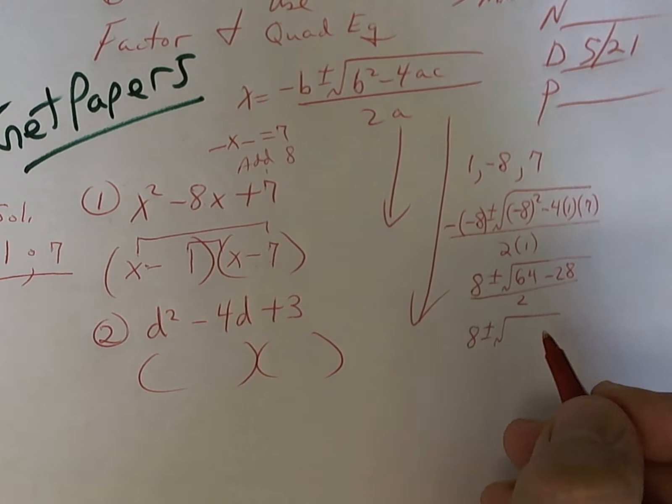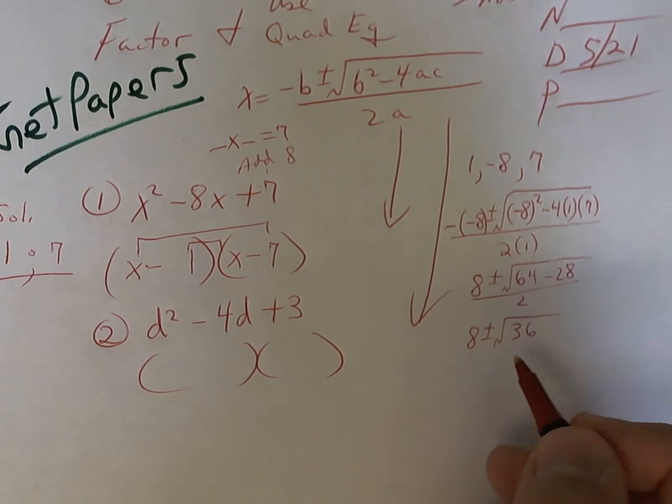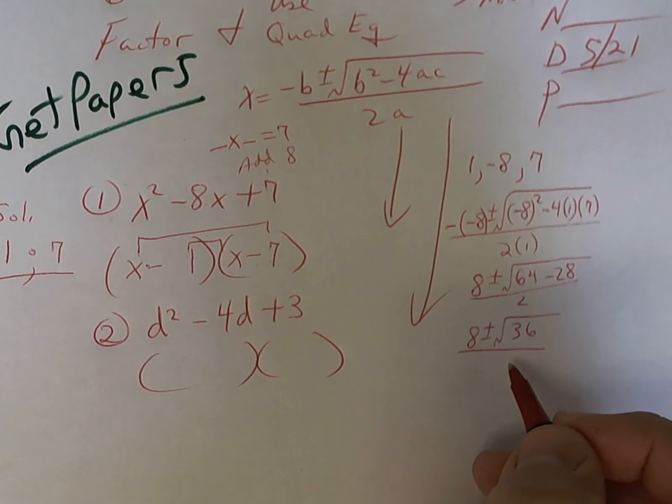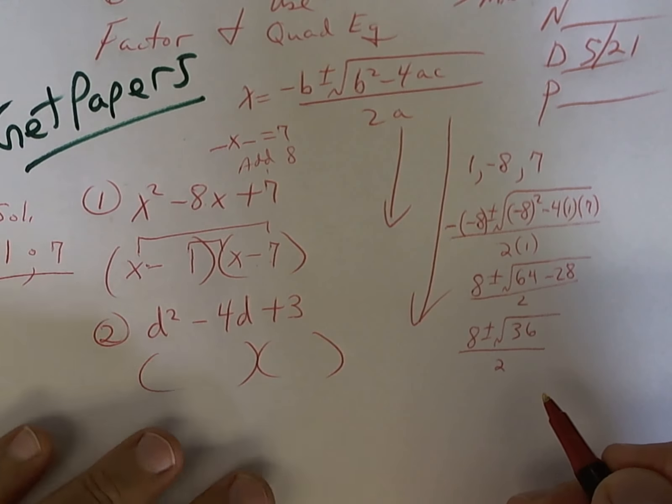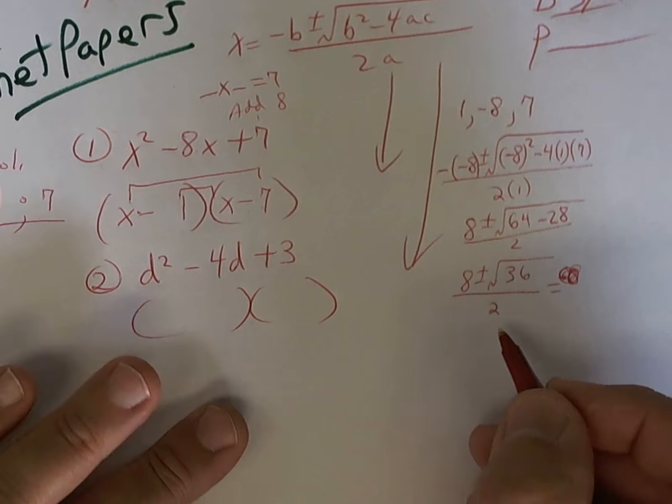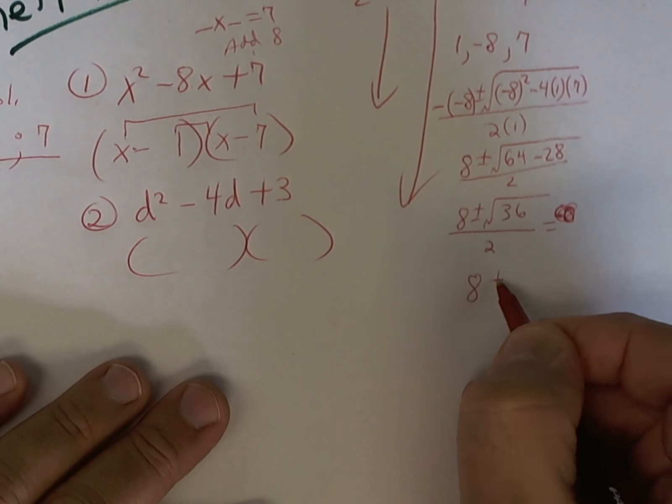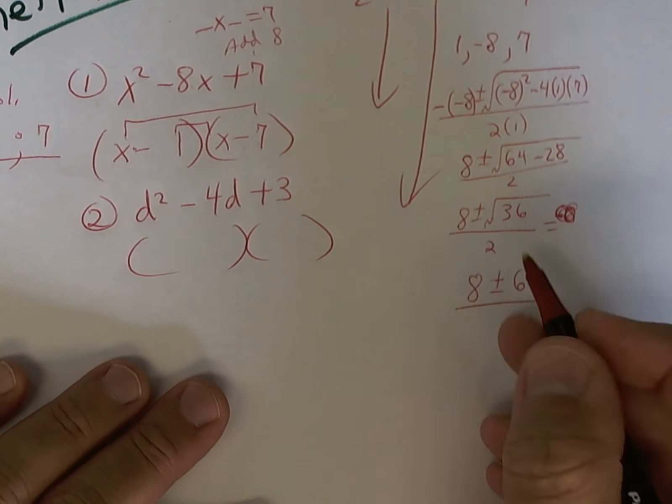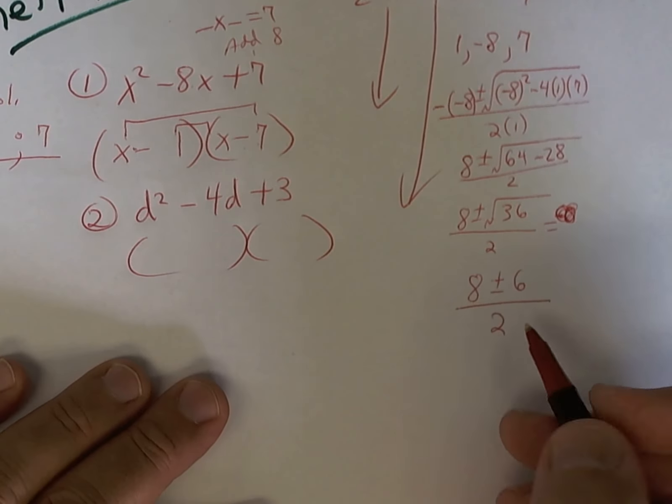So sixty-four minus twenty-eight is thirty-six. And the reason why I like thirty-six is because it's called a perfect square. So I'm going to finish it up. Now, the square root of thirty-six is six. Six times six is thirty-six. You got a plus and a minus, so I'm going to do the plus first.